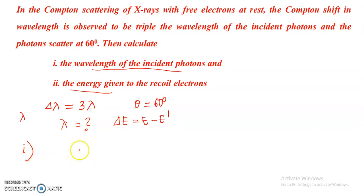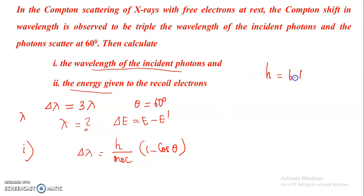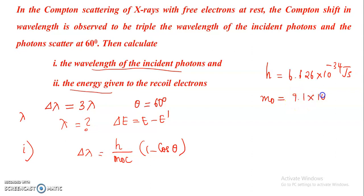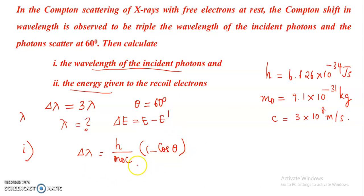We know the expression for the Compton shift in wavelength: delta lambda equals H divided by M₀C, multiplied by (1 minus cos theta), where H is Planck's constant equal to 6.626×10⁻³⁴ joules, M₀ is the rest mass of the electron equal to 9.1×10⁻³¹ kg, and C is the speed of light equal to 3×10⁸ meters per second. Since theta is 60 degrees, cos theta equals 1/2.